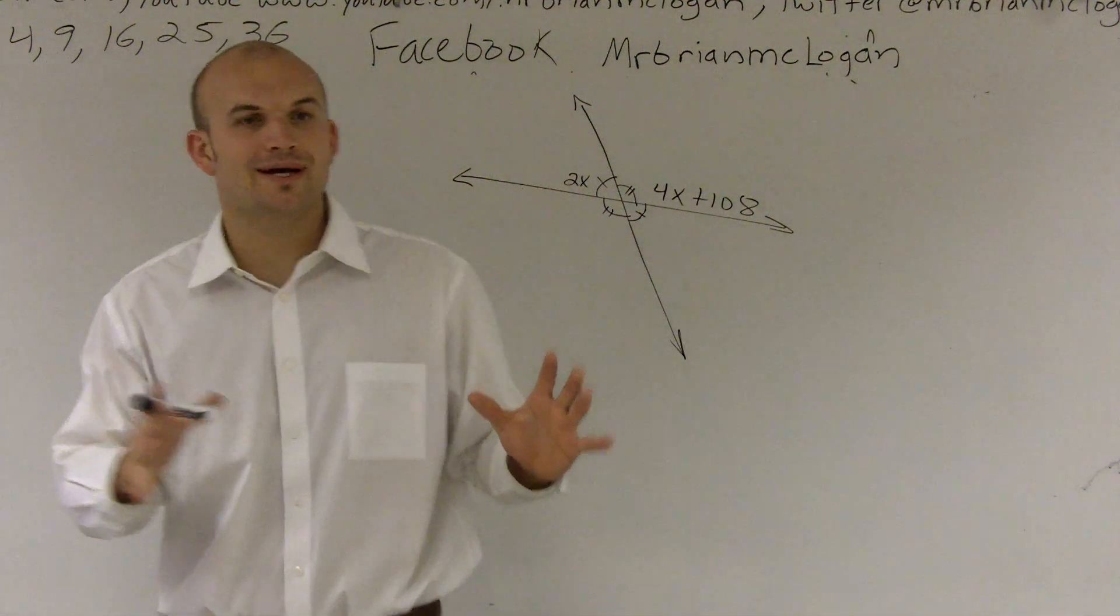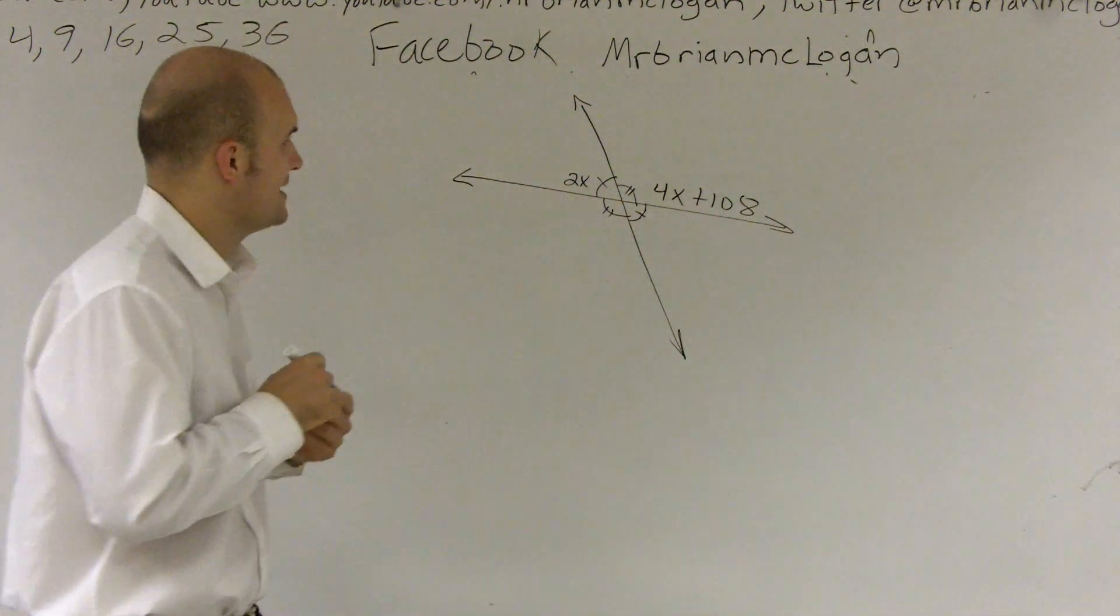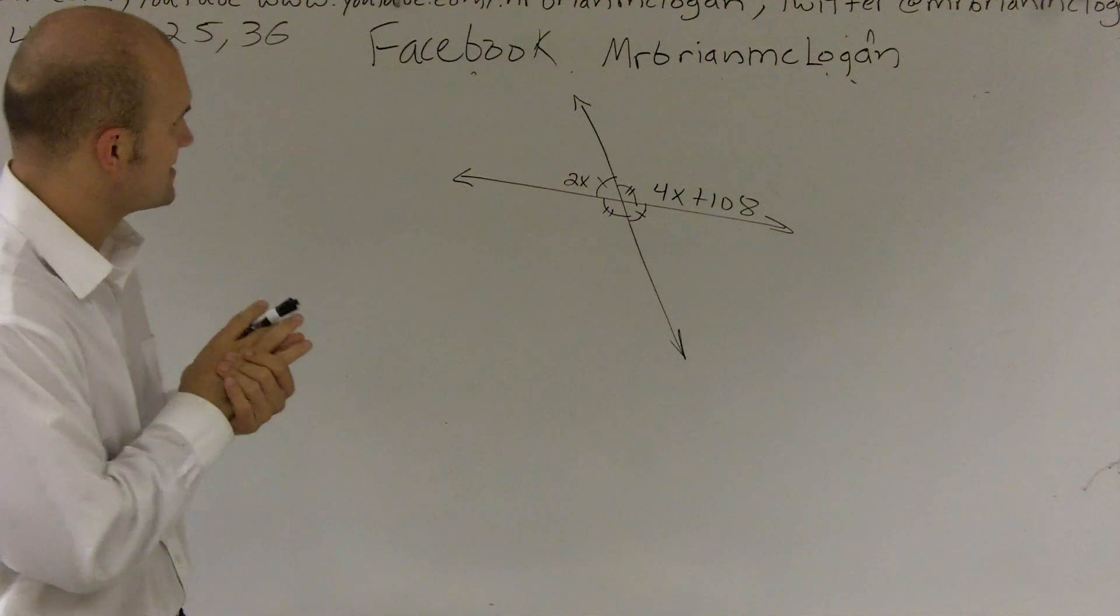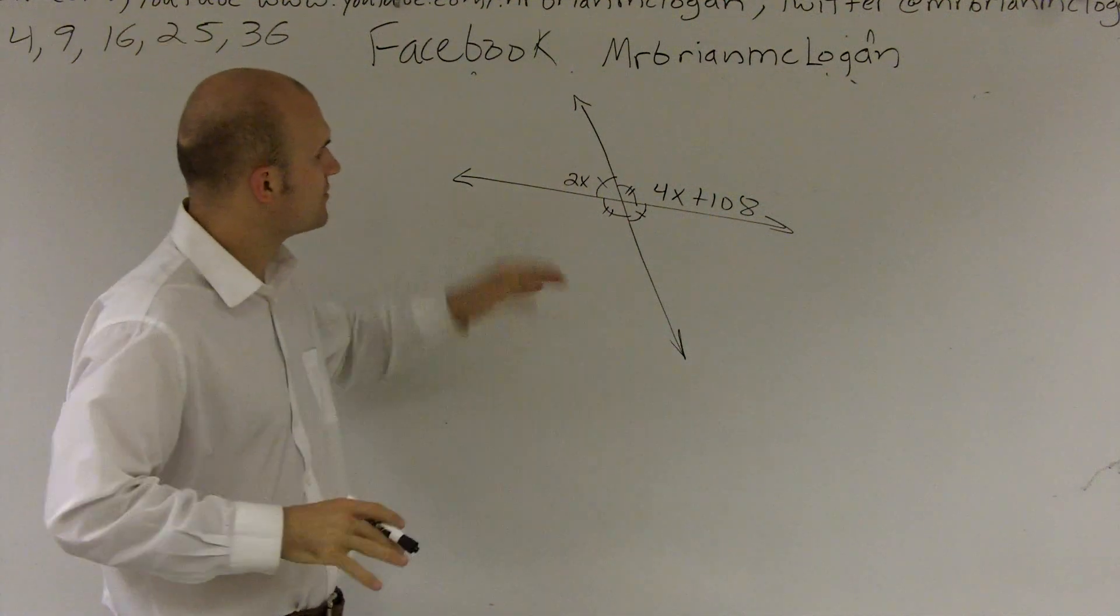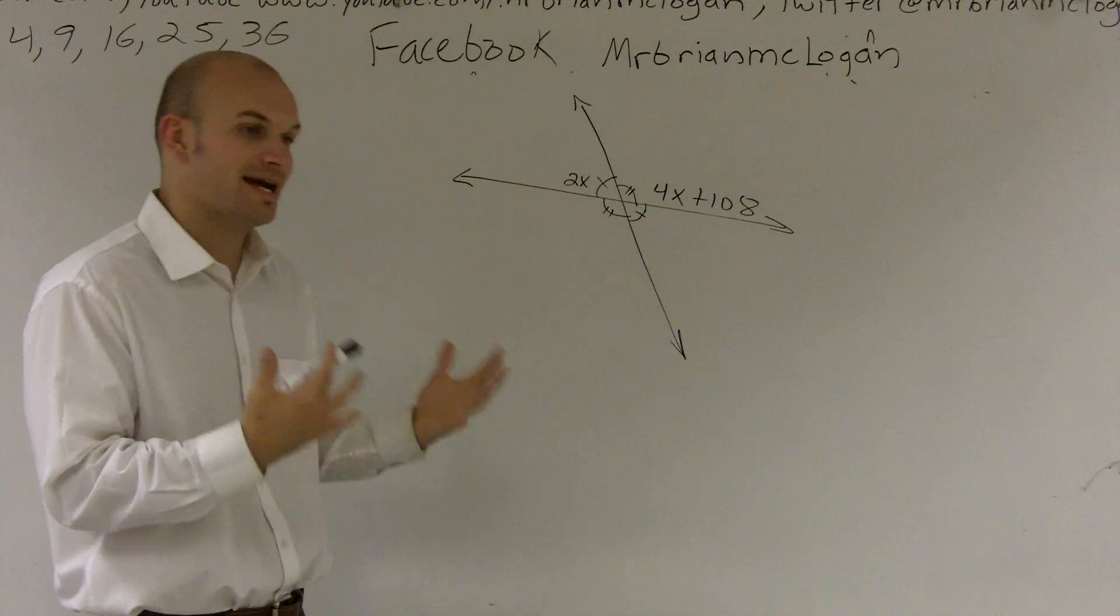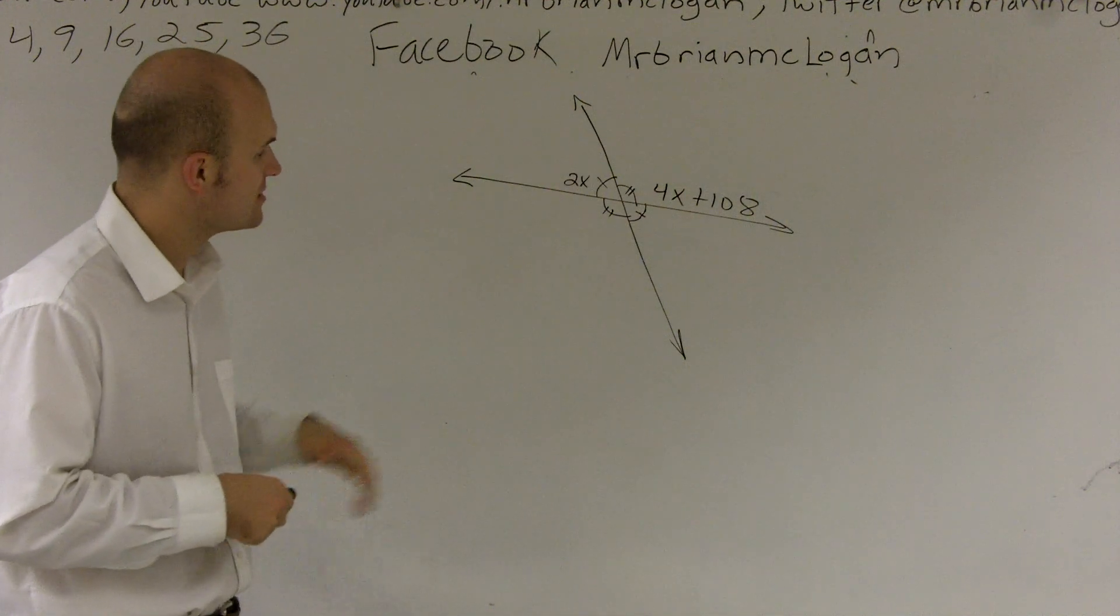All right. So now what we're going to do is work on some angles. And what we have is we have two intersecting lines. And with these two intersecting lines, what has been given to us is some angles. You kind of determine what the relationship is.